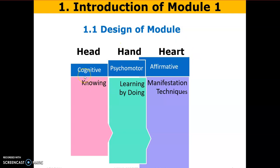This design is based on the cognitive, psychomotor, and affective domains. This is the highest learning model where three dimensions are considered. The cognitive domain means knowing. Here you will know about goal setting and coaching — how to set goals, how to do coaching. That is the knowing aspect.